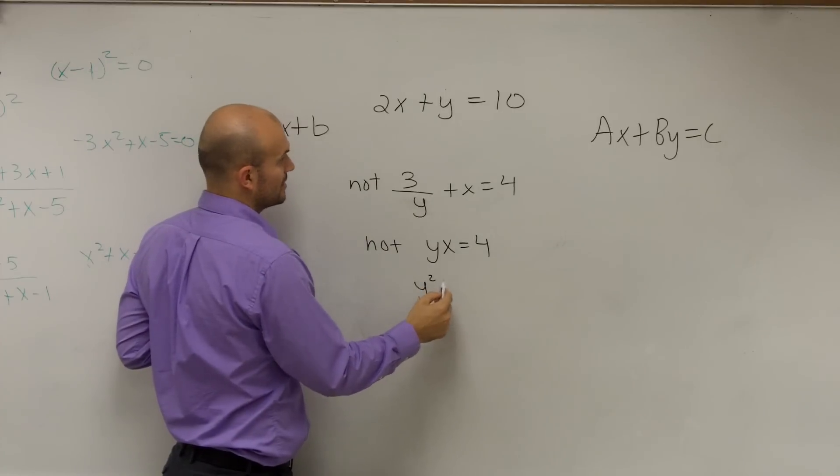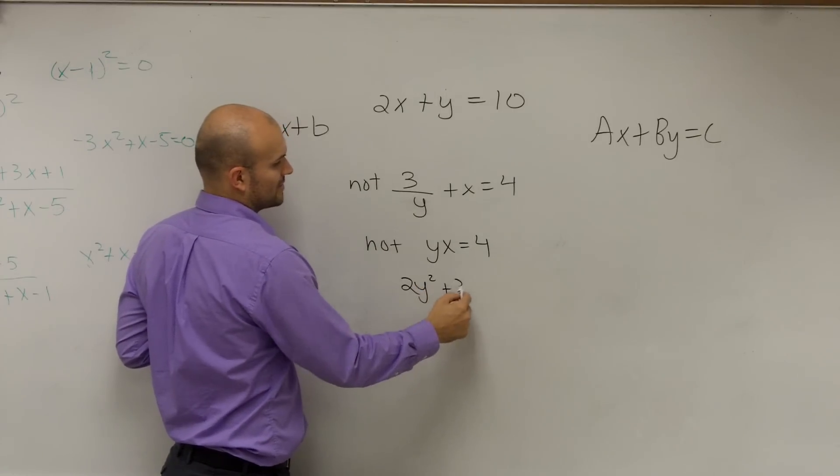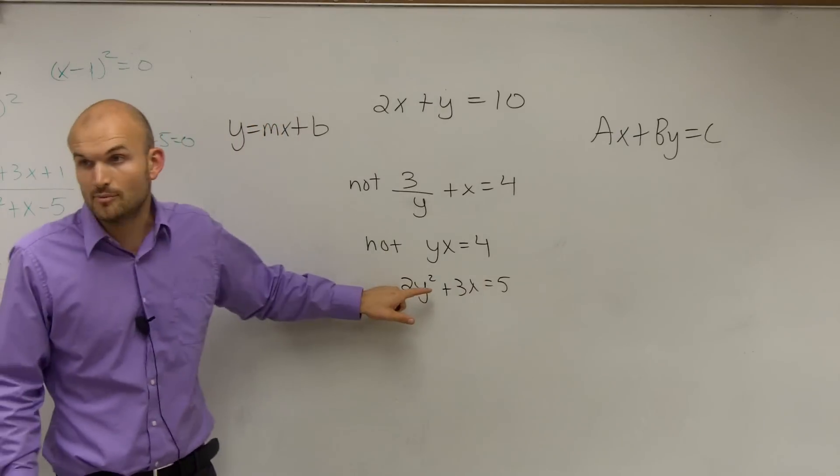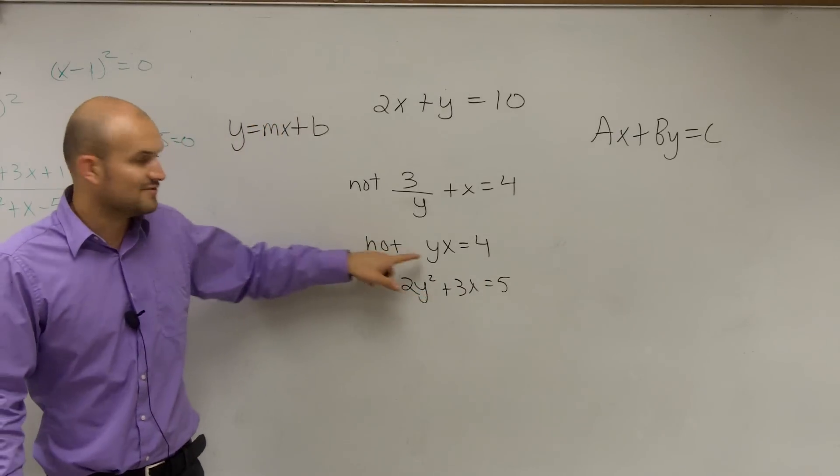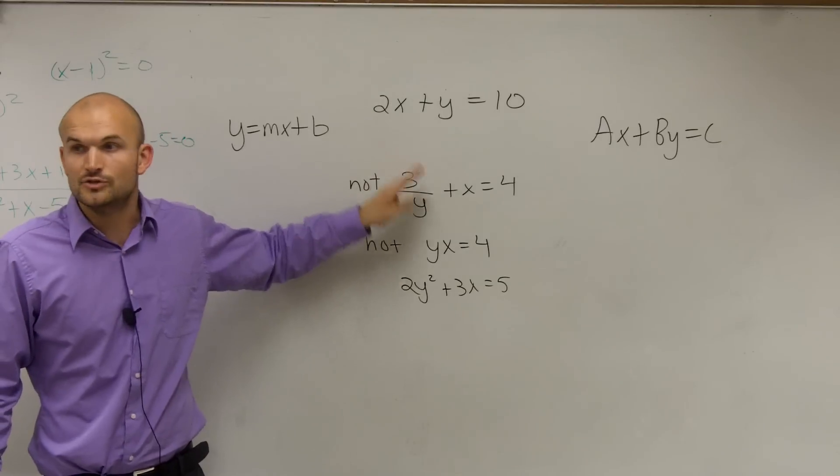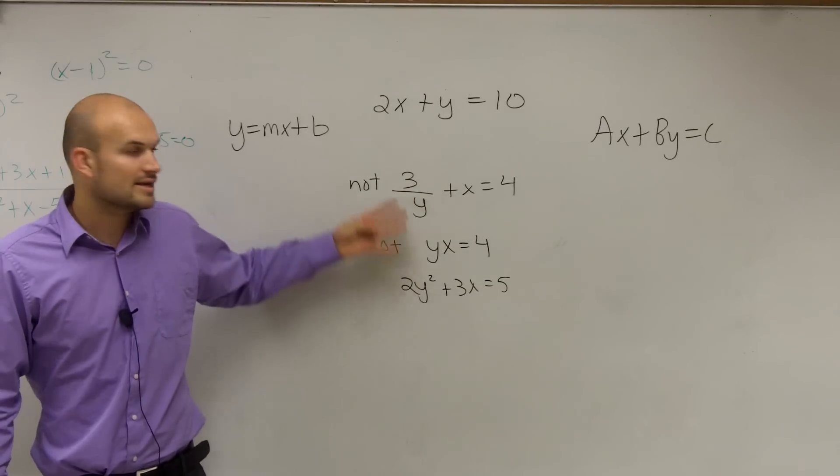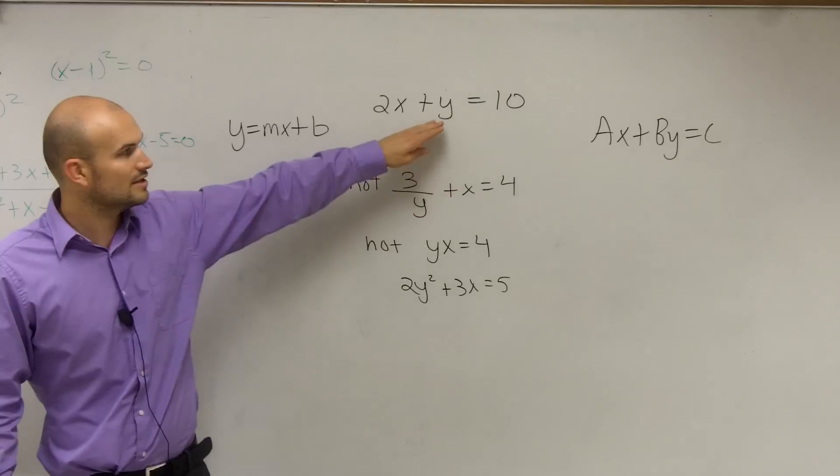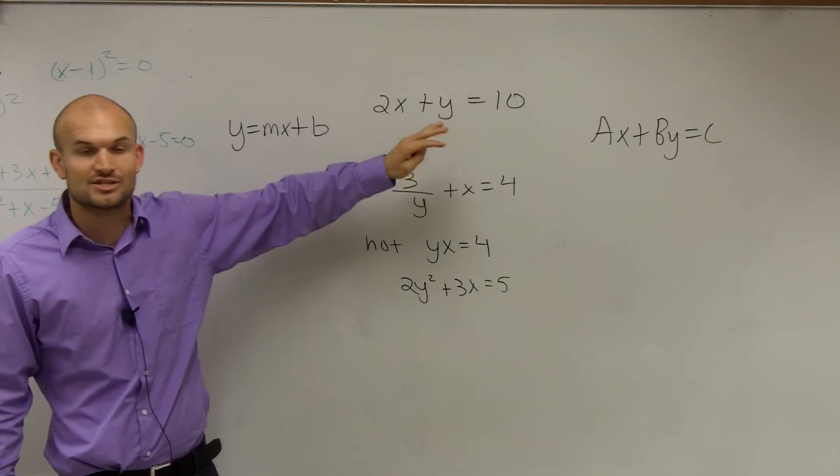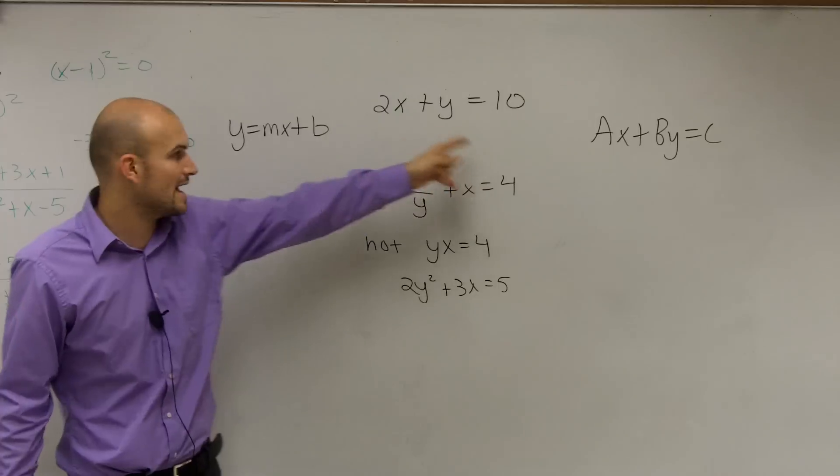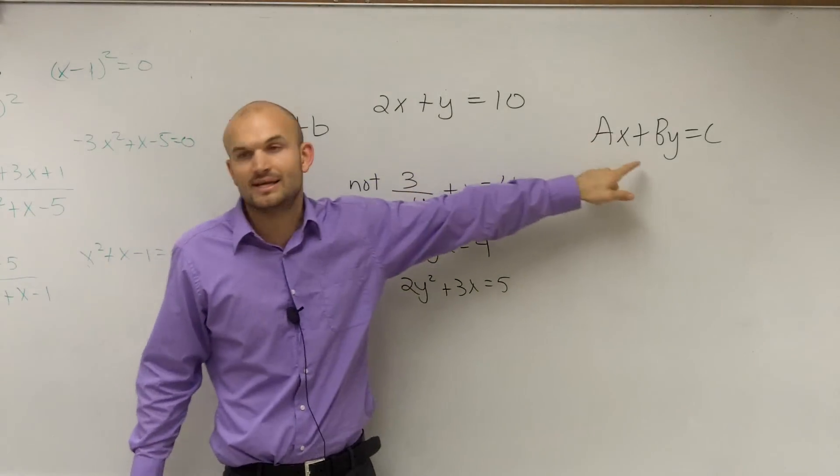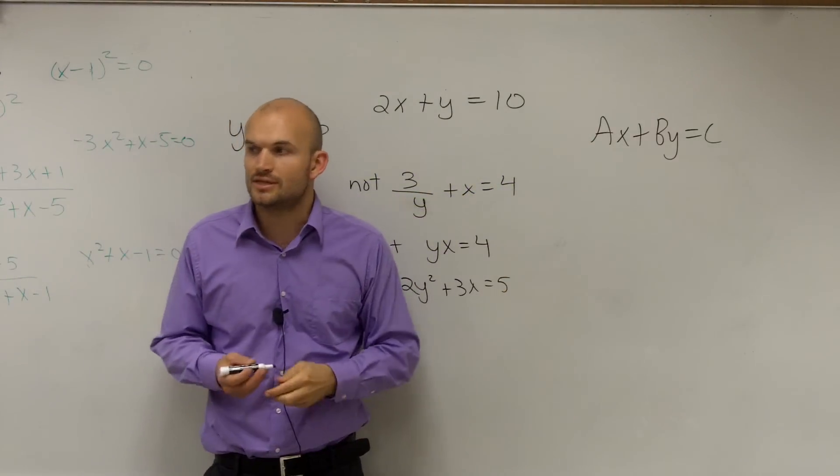Or you could say y squared, 2y squared plus 3x equals 5. So whenever you have a variable other than 1, you have your variables multiplied by each other, or you have a variable on the denominator, you do not have a linear relation. As long as it doesn't cover one of those, this doesn't have any of that, does it? So therefore, this is a linear relation. And also, we can prove that because we can write it in both of these forms. As this is already in standard form, so that's why I know it's a linear relation. Make sense?